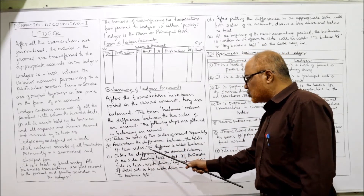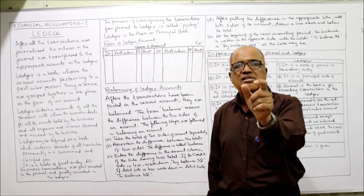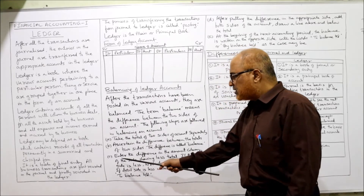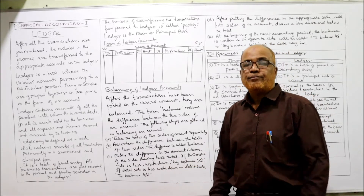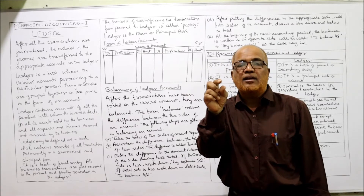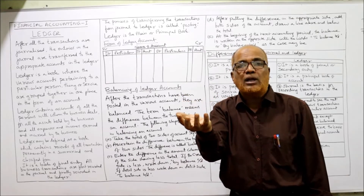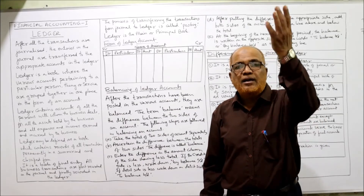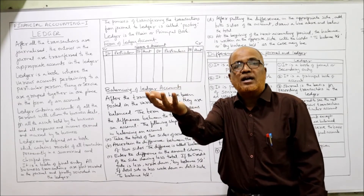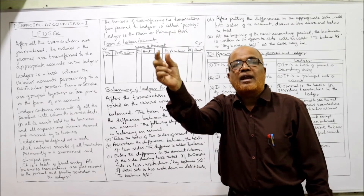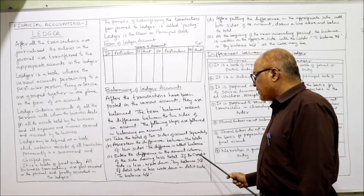The steps followed in balancing an account: first, take the total of both sides separately — debit side total 80,000, credit side total 70,000. Second, ascertain the difference between the two totals; the difference is called the balance — so 80,000 minus 70,000 = 10,000. Third, enter the difference in the amount column on the side showing the lower total. In our example, the credit side is lower, so we write 10,000 on the credit side.